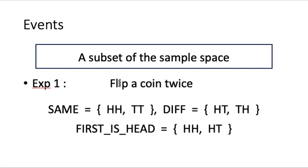So for instance, in our first experiment when we flip a coin two times, we may define a certain event called 'Same', meaning we observe the same outcomes in the two flips. In this case, 'Same' is the subset that contains HH and TT. We may also define an event called 'Diff', meaning the two flips are of different values — it contains HT and TH. And we may define an event called 'First is Head', indicating the first flip is a head, which is the subset containing HH and HT.